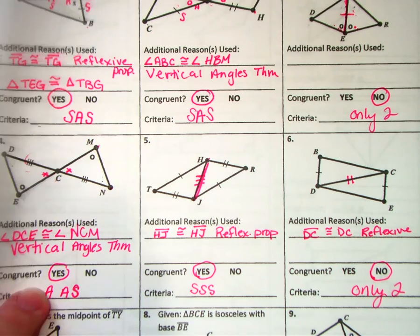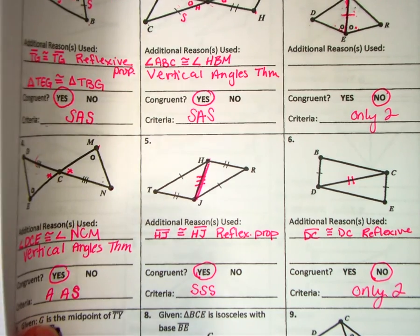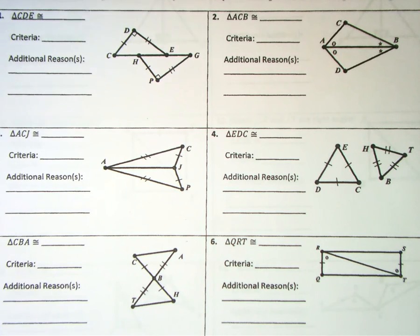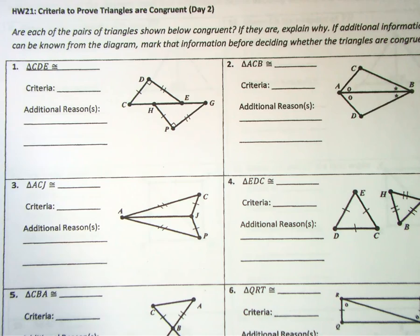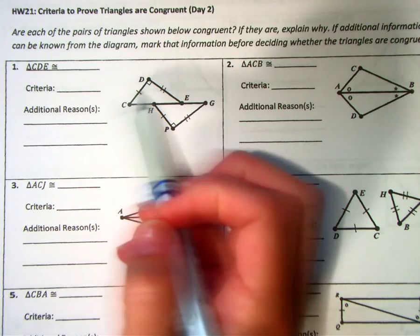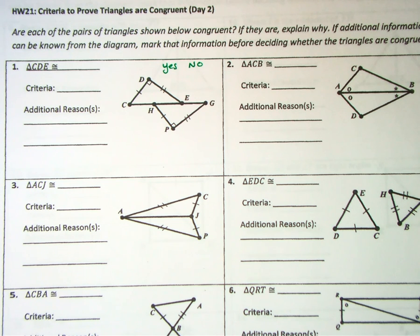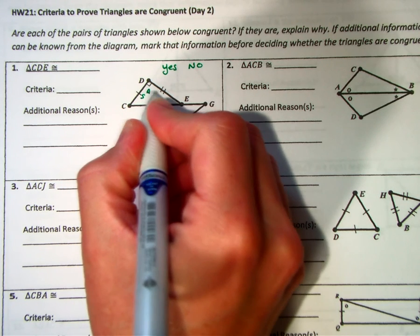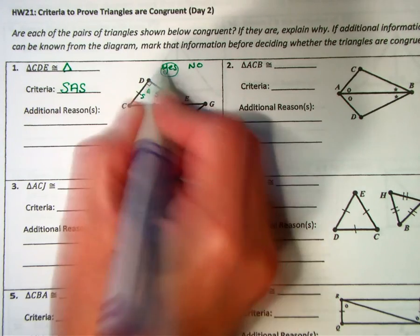We'll finish problems seven, eight, and nine tomorrow. Tonight's homework is Homework 21, but you're only working on the first page — problems one through eight. It does have an added piece of information, so let's do the first one together. Instead of circling yes or no, you need to write the triangle congruency statement when the answer is yes.